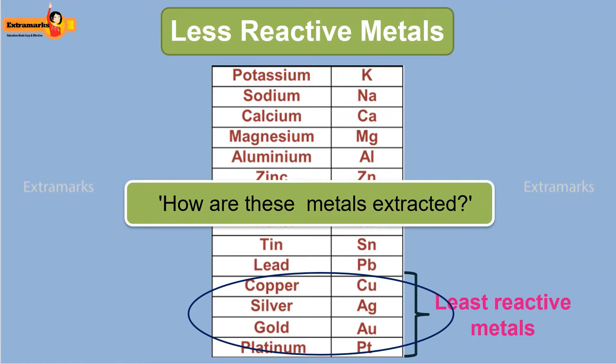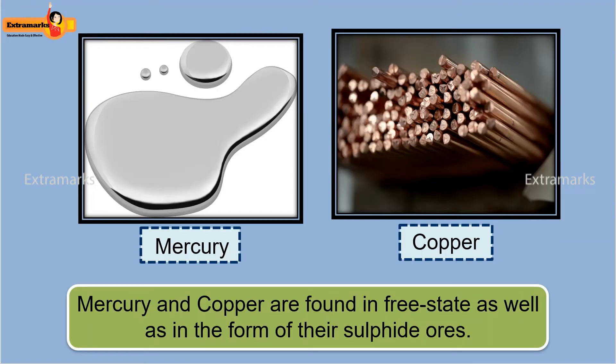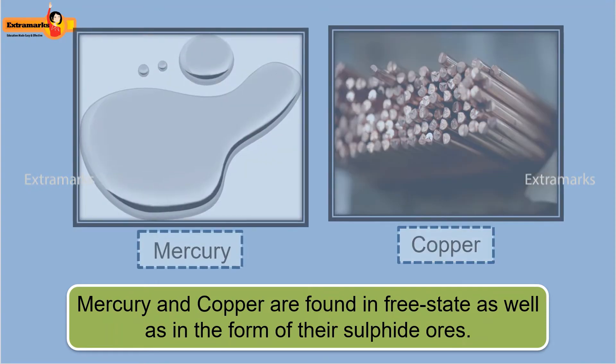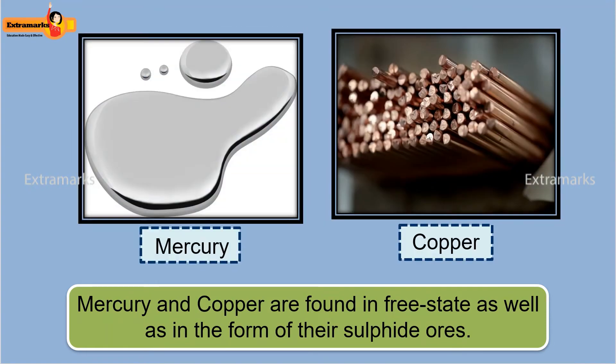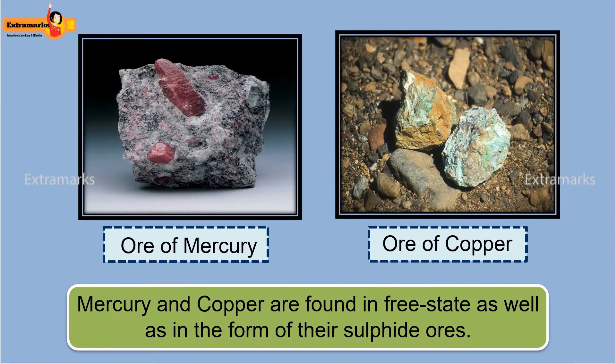How are these metals extracted? Let's talk about them. In nature, metals such as mercury and copper are found in free state as well as in the form of their sulfide ores.